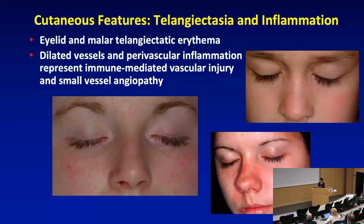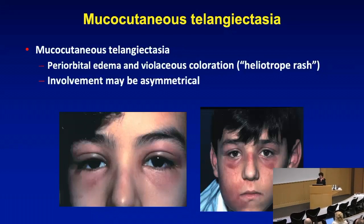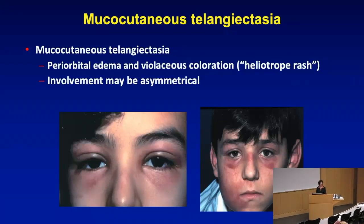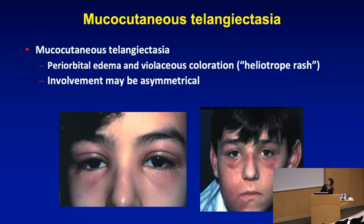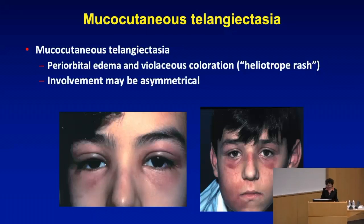You need to think about whether there's a secondary process or an alternative process like seborrheic dermatitis. These telangiectasia are often involving the periorbital area with edema and a violaceous coloration — the so-called heliotrope rash, which is an important distinguishing feature of dermatomyositis. The involvement may be asymmetrical with the skin lesions.